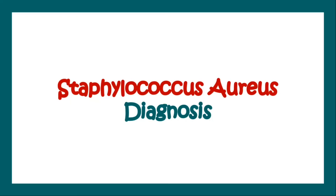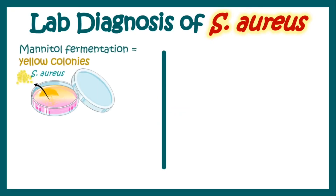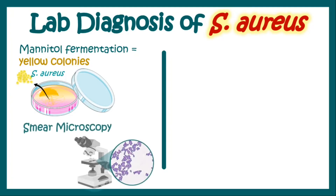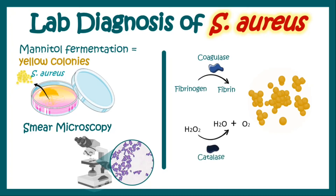Let us come to the diagnosis of Staphylococcus aureus. Lab diagnosis ranges from collection of a sample, putting it into culture plates, performing cultures, doing microscopy from smears produced from these cultures, and performing biochemical analysis based on coagulase and catalase. For a detailed understanding of laboratory diagnosis of S. aureus, check out the video on S. aureus on the NerdMedics YouTube channel.